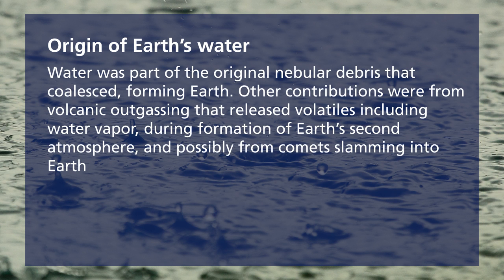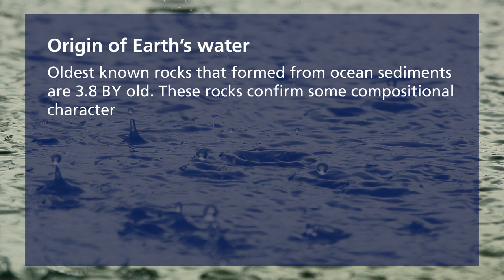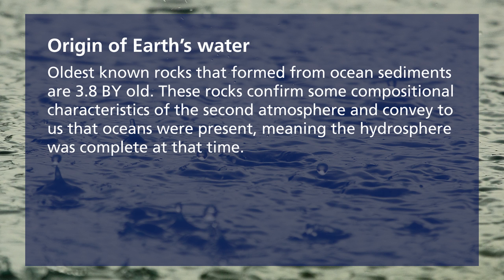The origin of Earth's water: water was part of the original nebular debris that coalesced to form the Earth. Other contributors may be volcanoes releasing volatile gases — releasing more water vapor — and possibly comets and asteroids slamming into the Earth. Upon Earth's more complete cooling, the water vapor condensed and precipitated as liquid on Earth's surface. The oldest known rocks formed from ocean sediments are approximately 3.8 billion years old, confirming some compositional characteristics of the second atmosphere. So the hydrosphere on our planet Earth is approximately 3.8 billion years old.